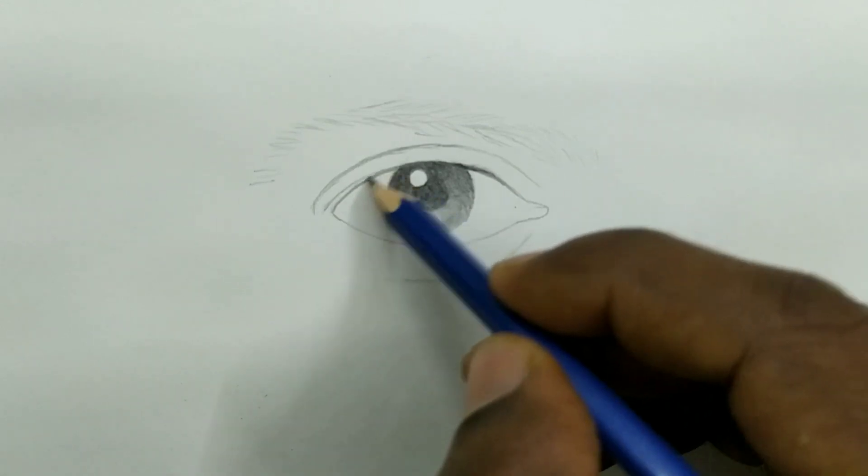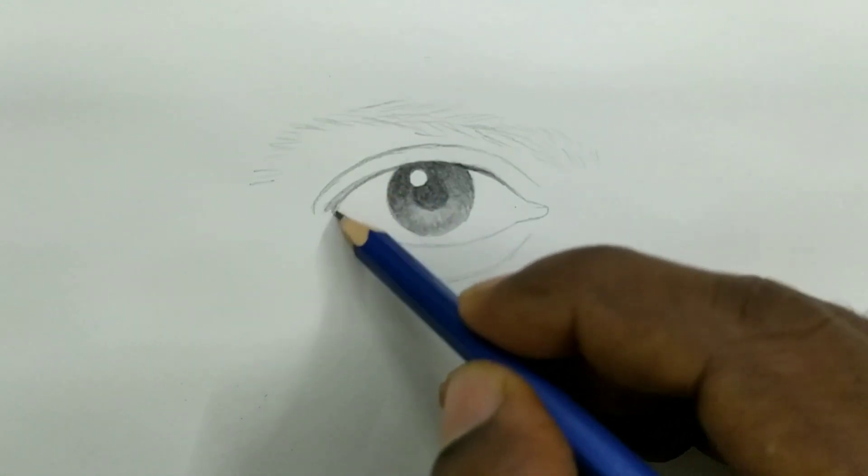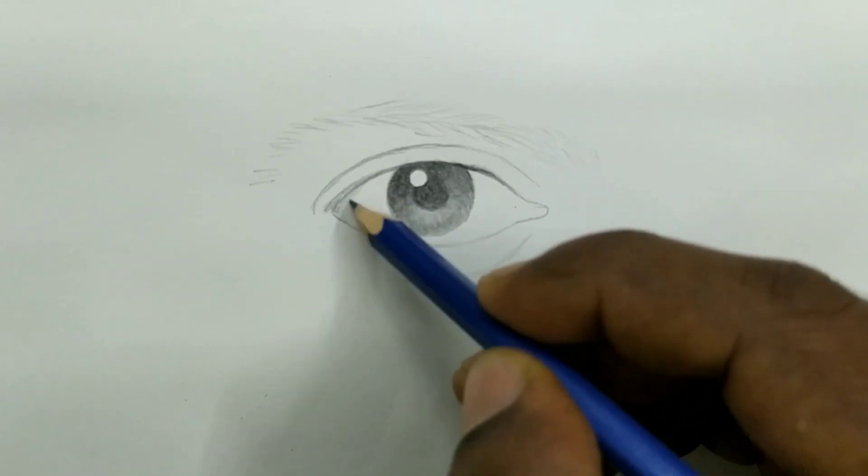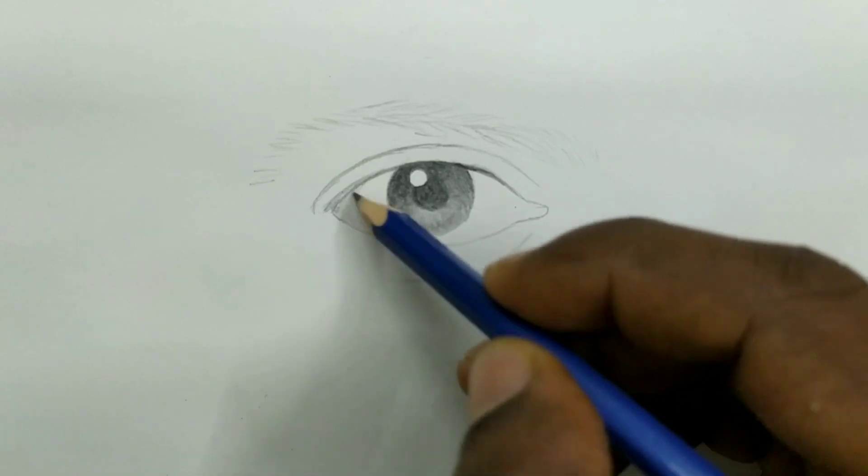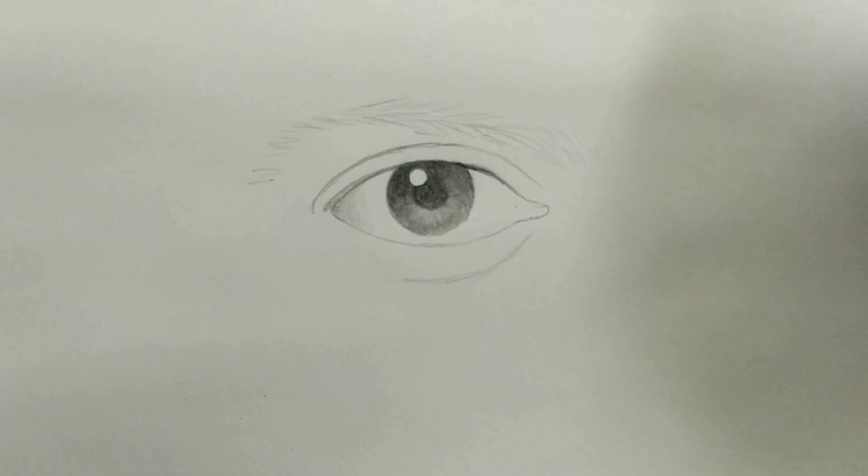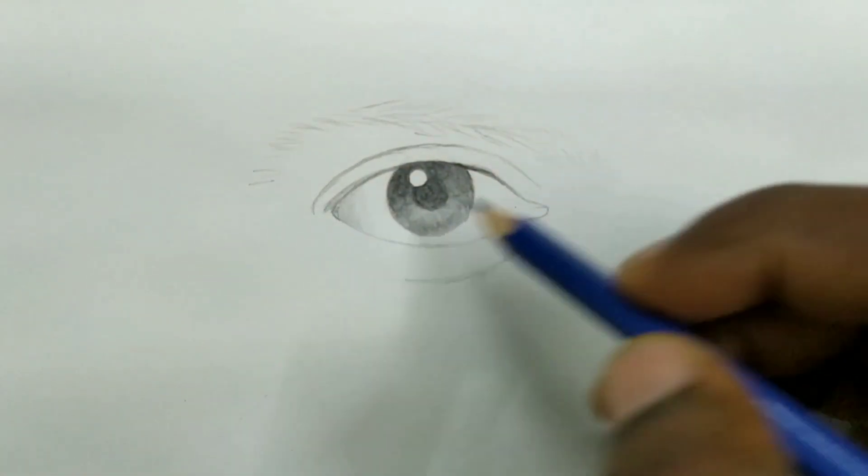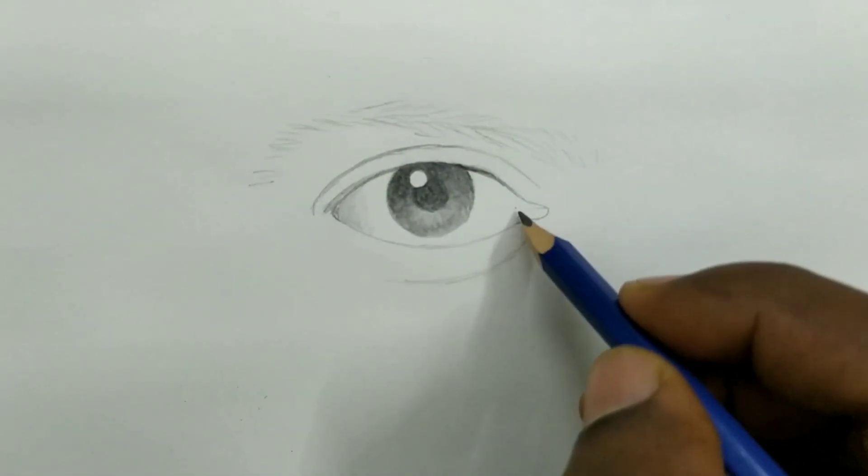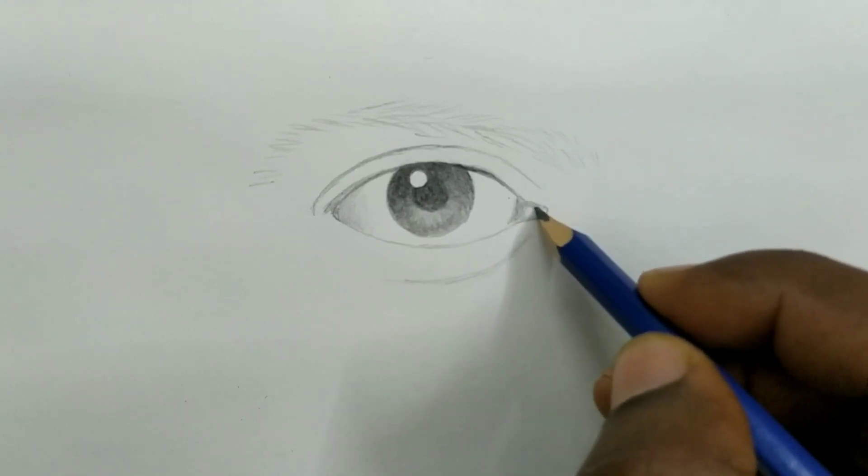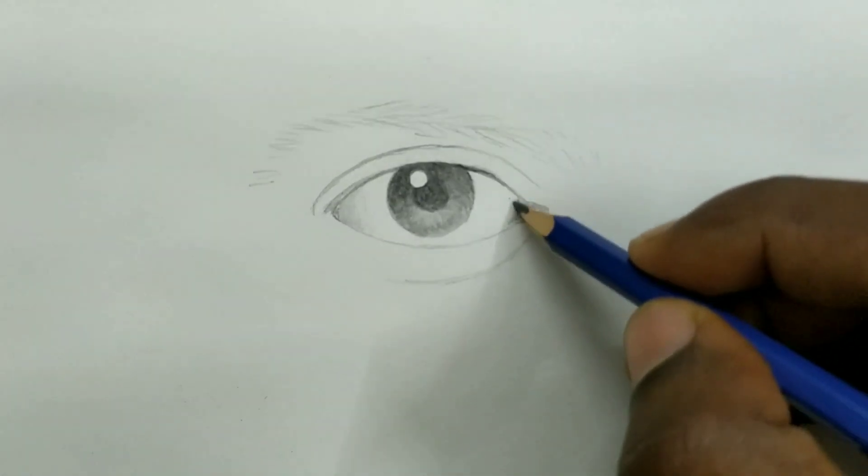Now let us give little shades to the corner so that the eye will look three dimensional. So that the center portion of the eye will be higher and the outer portion will be the deeper, natural look will be getting. And this side, keep in mind that there will be a small highlight so leave that area white.